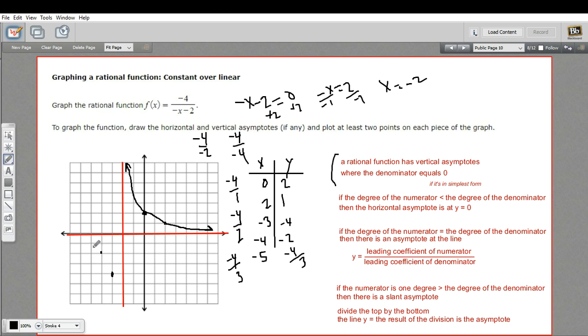So negative 1 and a third would put us right there. And you can see we're starting to curve this direction. So at this point, we can probably pretty confidently sketch in this like this.